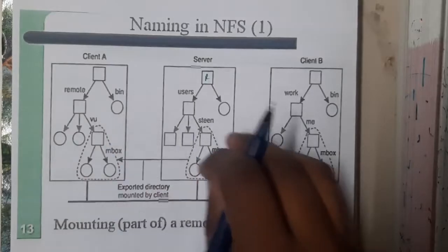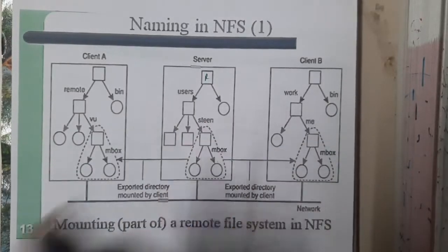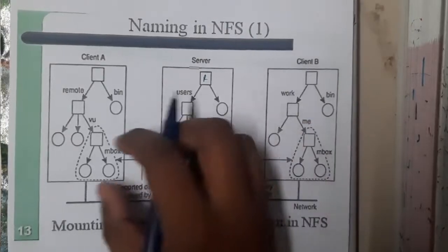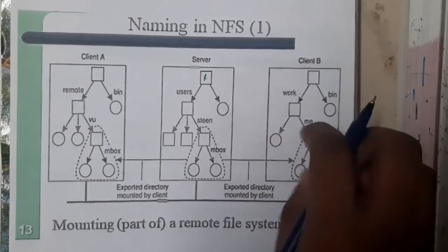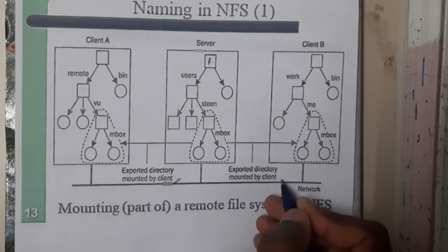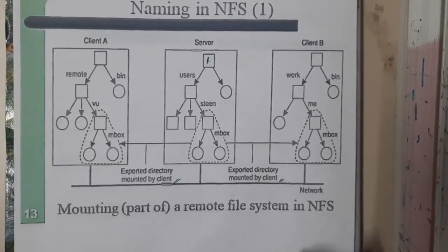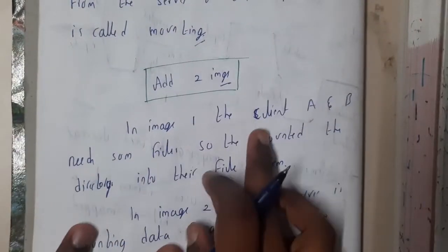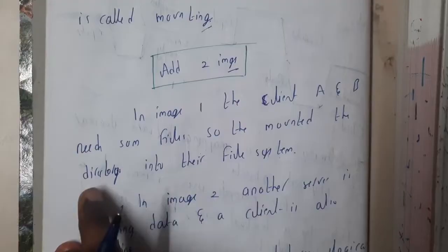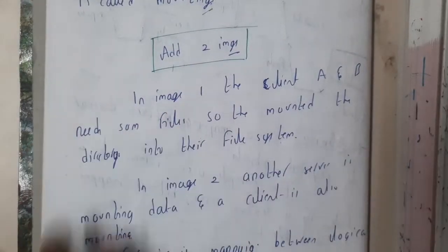He can directly duplicate this data into his clients. So basically if client A and B needs the same data, they will be mounting this data. So basically this data is copied here and this data is copied here, so it is nothing but exported directory mounted by client. This process is nothing but mounting. So in image 1, the client A and B needs some files so they are mounted with the whole directory.